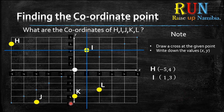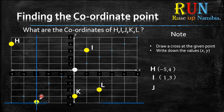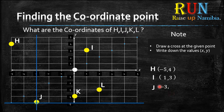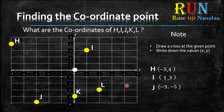Now pause the video and try out J, K, and L yourself. For J, we draw our cross lines. Then we check the x-axis first — where does that blue line cross the x-axis? It's at negative 3. Write down negative 3, put a comma, then go to the y-axis — where does the other blue line cross? That will be at negative 5. Write down negative 5 and put it into brackets.